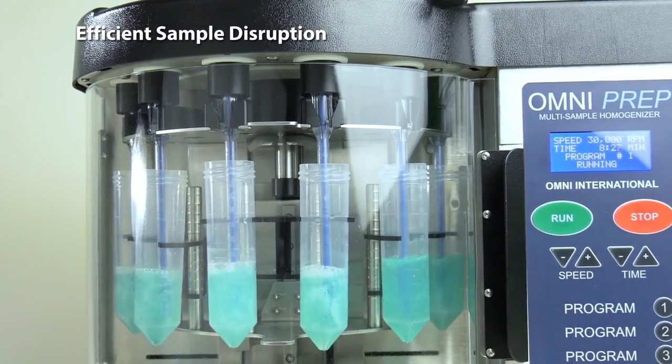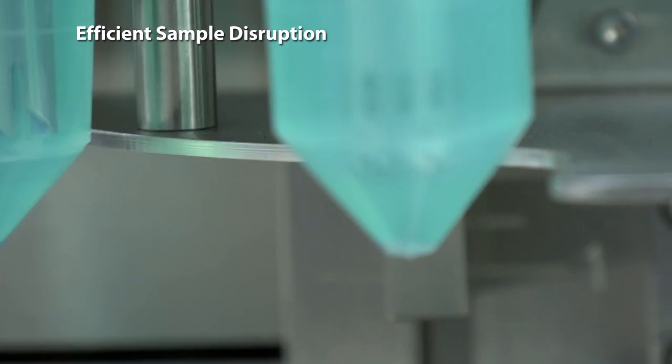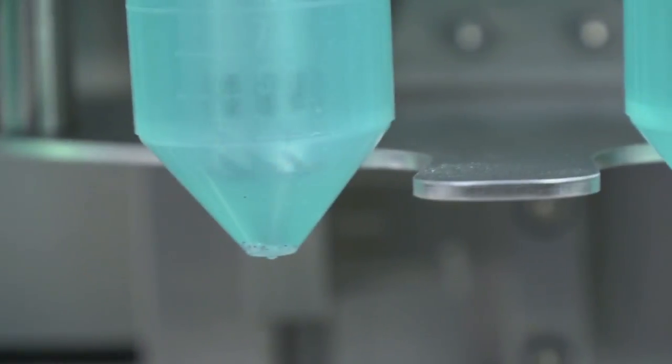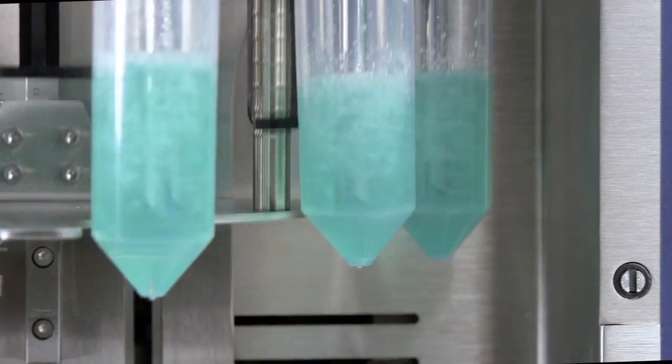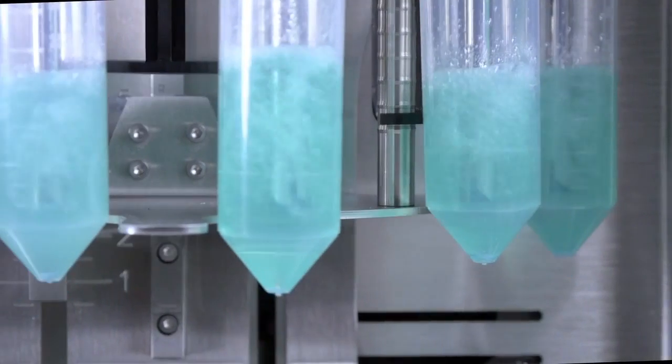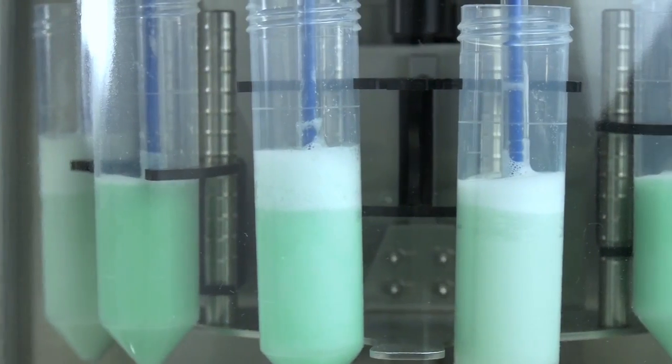Efficient sample disruption is achieved by unique generator probe oscillation, including up and down motion to replicate human-like movement of generator probes and ensure contact between generator probe and sample.